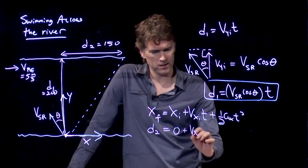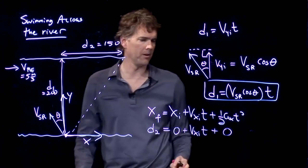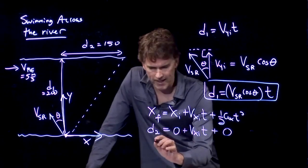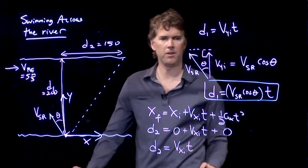v x initial, we're not exactly sure yet. There's no acceleration, so that is zero. Alright. So we get d2 equals v xi times t.